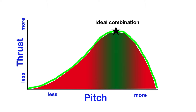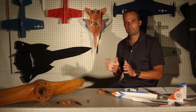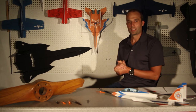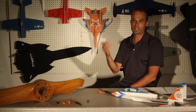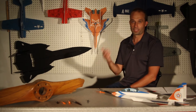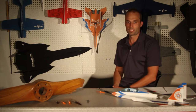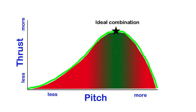Now, this may seem like a simple thing, but at some point the increase in pitch is going to be counterproductive, and the propeller will actually generate less thrust. So let's go back to the illustration. On this illustration, you can see a star, and that star represents the optimum pitch for that propeller. If you start to increase the pitch beyond that, you are going to lose thrust.